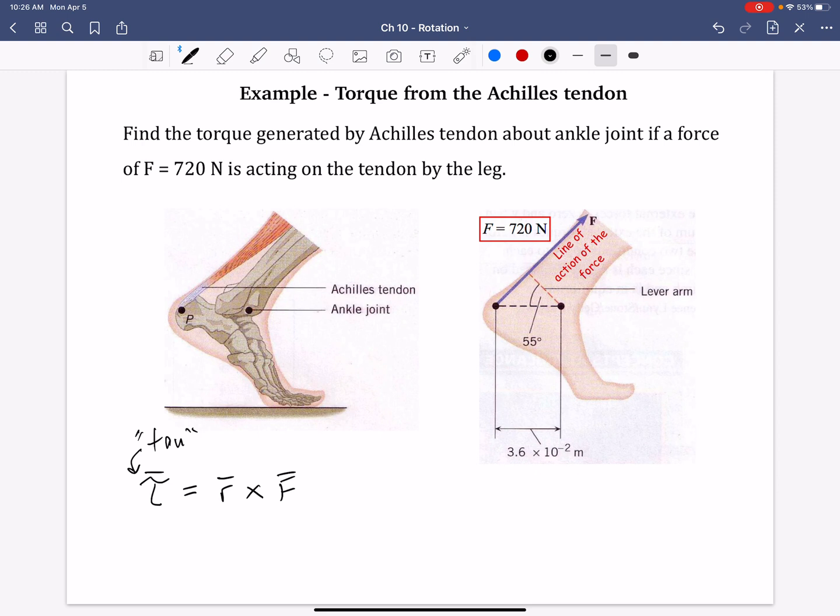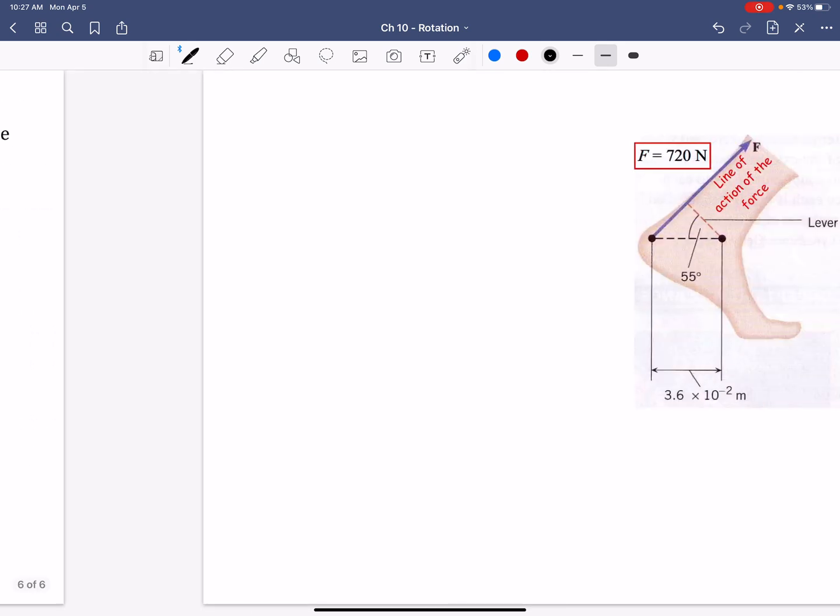Remember back when we did cross products, the magnitude of this is equal to the magnitude of the first vector times the magnitude of the second vector times sine of the angle in between R and F. So keeping this in mind, let me go to the next page, and we'll solve it each of the three ways.